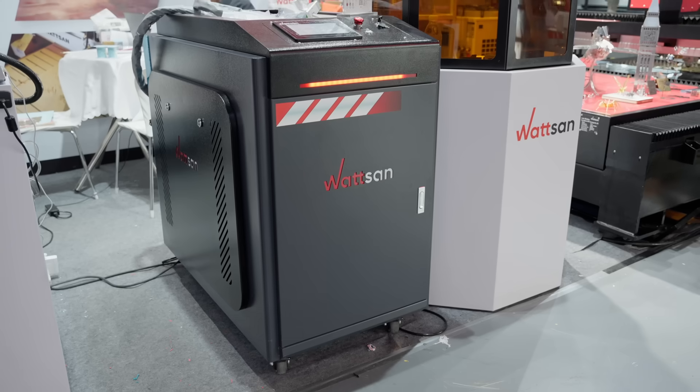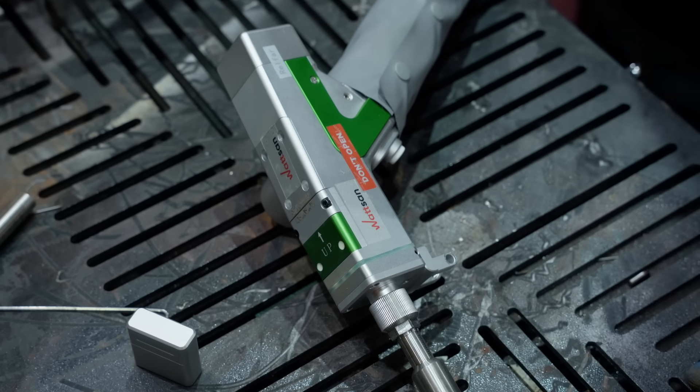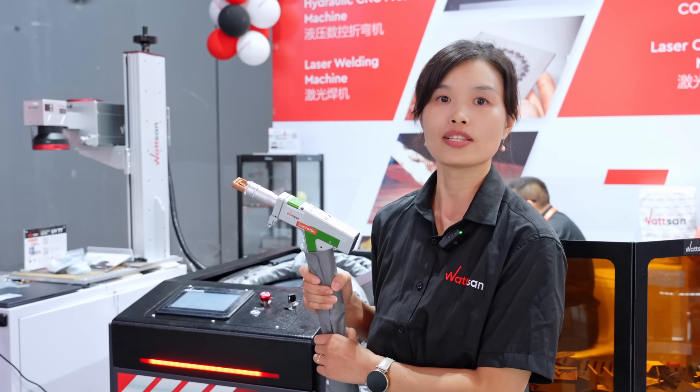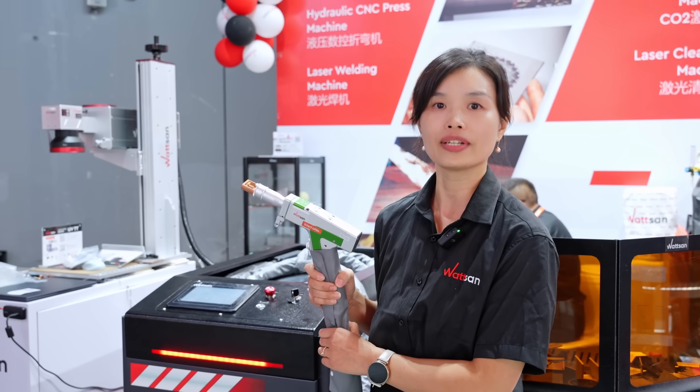As mentioned, this machine has two mirrors in the gun, allowing you to create different weld shapes. Why is this necessary? Let's take another look at them.